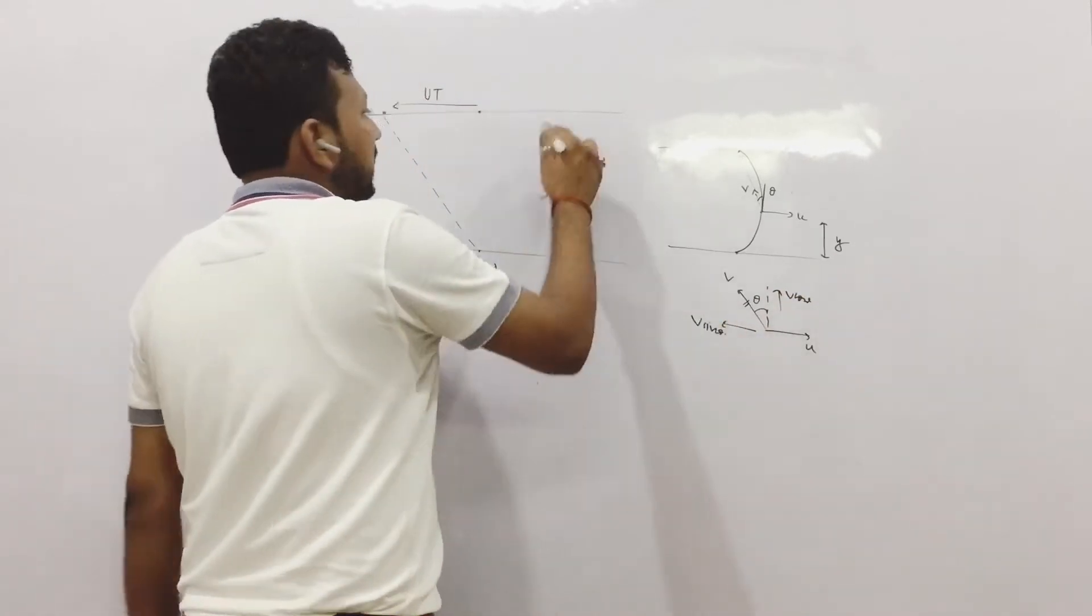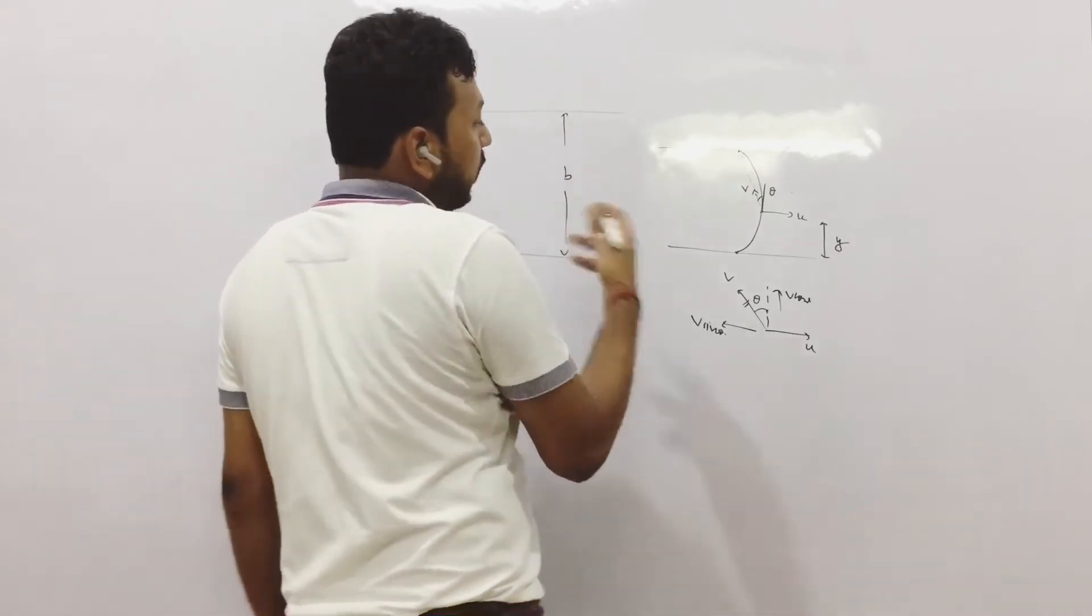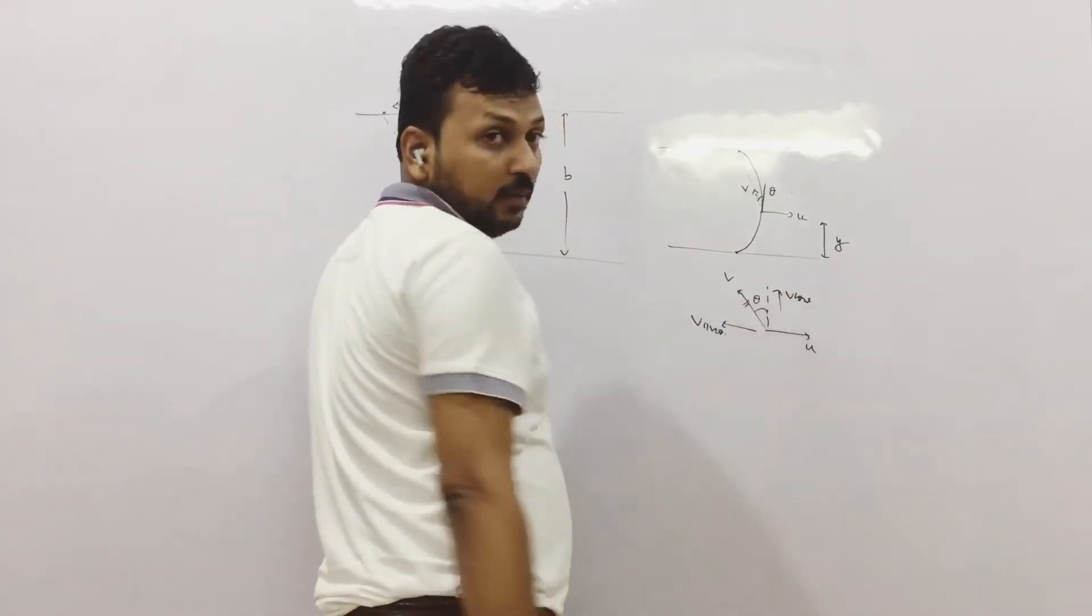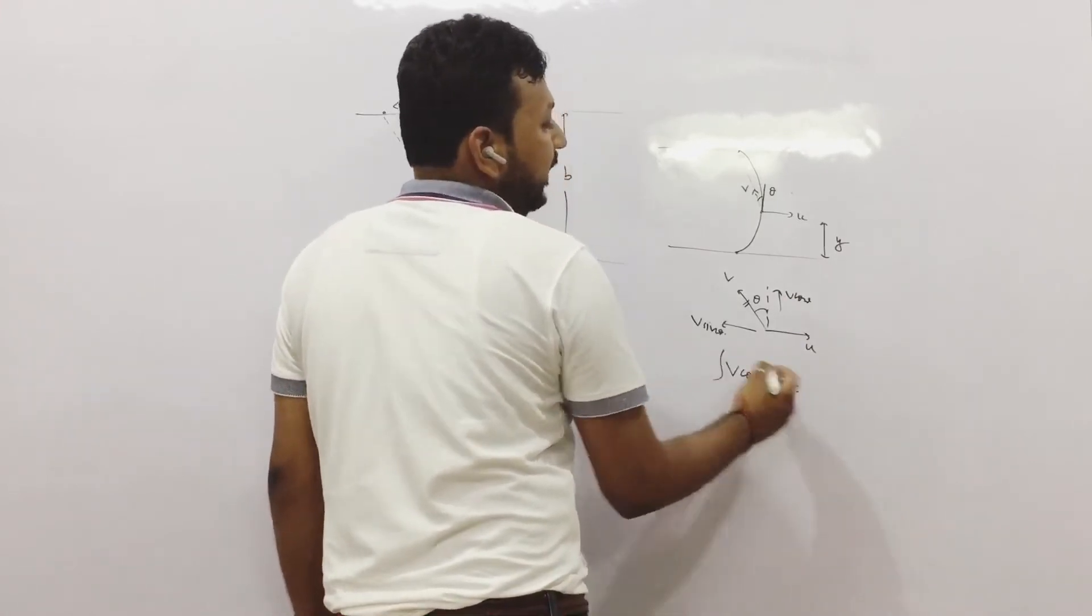Now we will see this distance b, which was given in the question. Which velocity covered it? v cos theta. So we can first write v cos theta into dt integration at any instant.